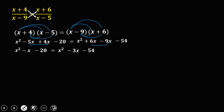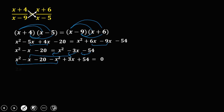Then equate the equation to zero by transposing everything to the left side. The positive x squared becomes negative x squared, negative 3x becomes positive 3x, and negative 54 becomes positive 54, equals zero. Combining like terms: x squared minus x squared is 0, negative x plus 3x is 2x, and negative 20 plus 54 is positive 34, equals zero.